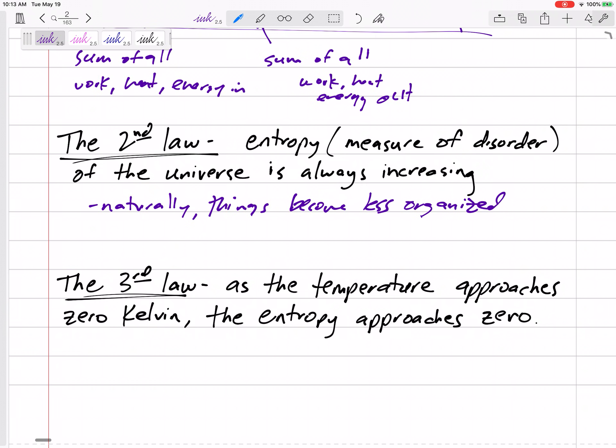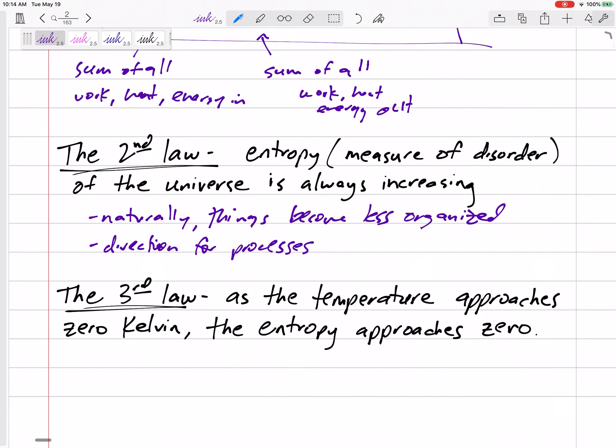It's kind of a measure of disorder. Things become more disordered. It's almost a measure of chaos. If we don't put work into things, things become more chaotic. This gives a direction for some processes. If we could measure the disorder, if we can measure the entropy, we know that naturally the total entropy is going to increase. Now we might have pockets where the entropy decreases, but on a whole, if we look at the universe or something that we could define as the universe, entropy is always increasing.